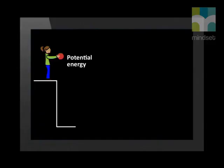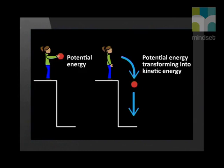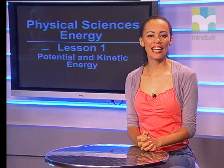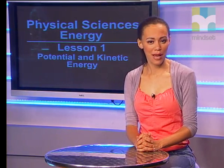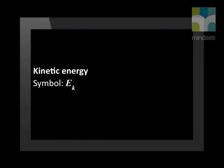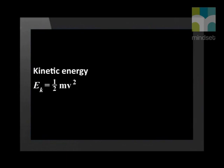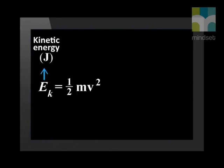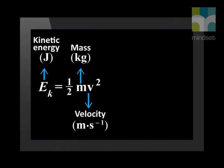Consider another example: a girl holds a ball in her hand at a certain height above the ground, where it possesses gravitational potential energy. When she lets go of the ball, that energy is transformed into kinetic energy. Kinetic energy is the energy that an object possesses due to its motion, and depends on two variables: the mass of the object and the velocity at which it moves. The symbol used for kinetic energy is E subscript K, measured in joules. The equation is Ek = ½mv², where m is mass in kilograms and v is velocity in meters per second.